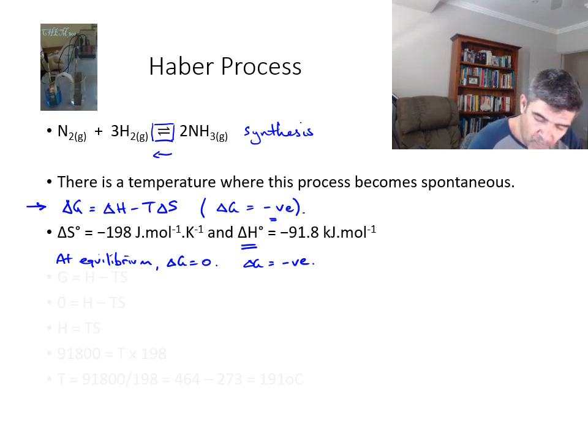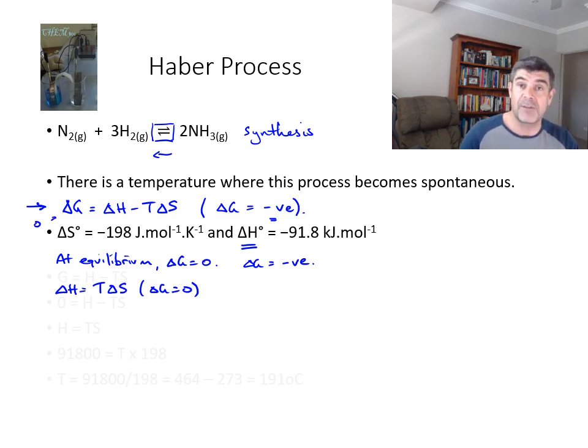So if we want that to be negative, then effectively what must happen is that if we rearrange the expression for delta G, we can get delta H is equal to plus T delta S. Now this is at the point where delta G equals zero. So effectively zero, I've substituted zero into this term here and then just rearranged it by moving the T delta S onto the opposite side.